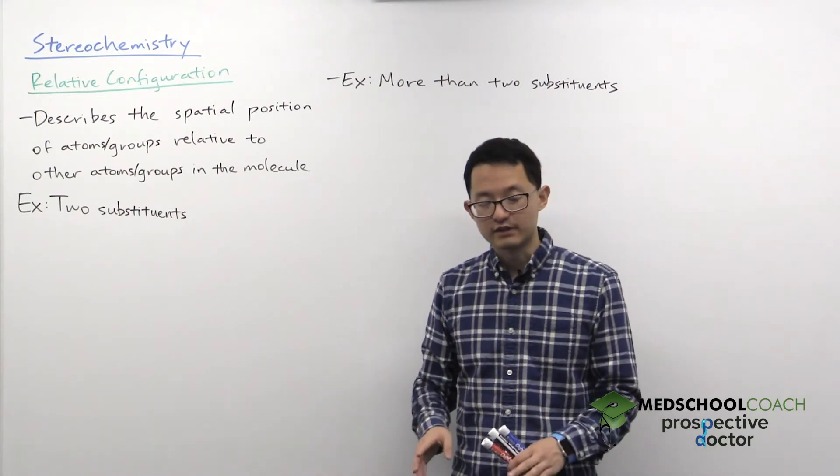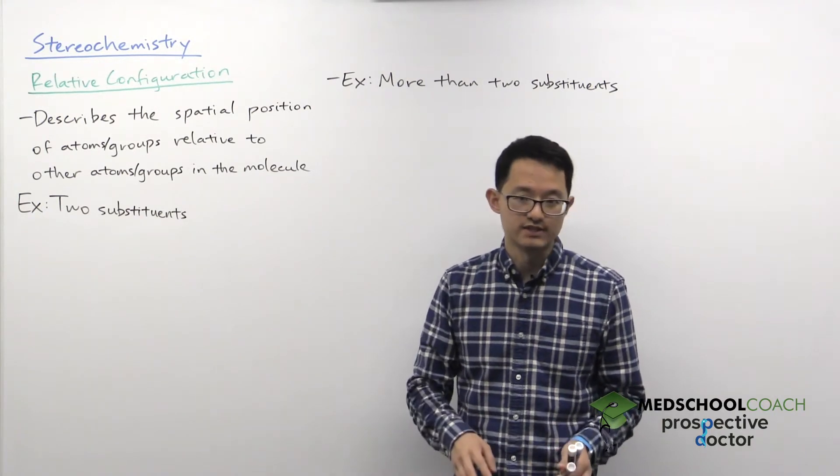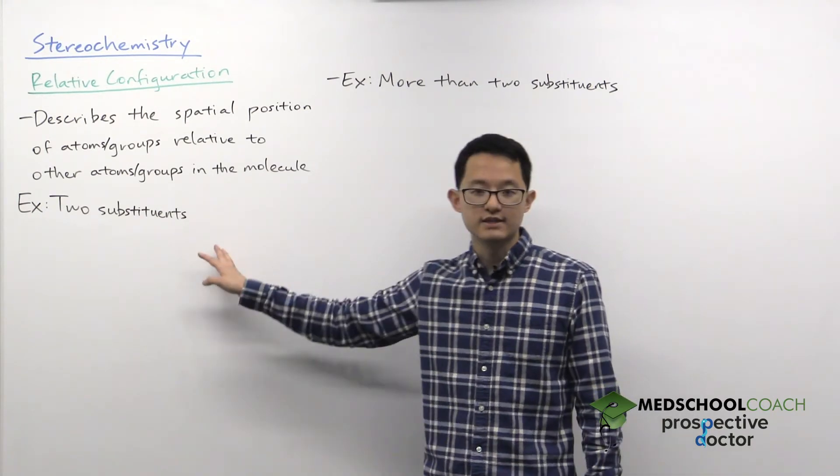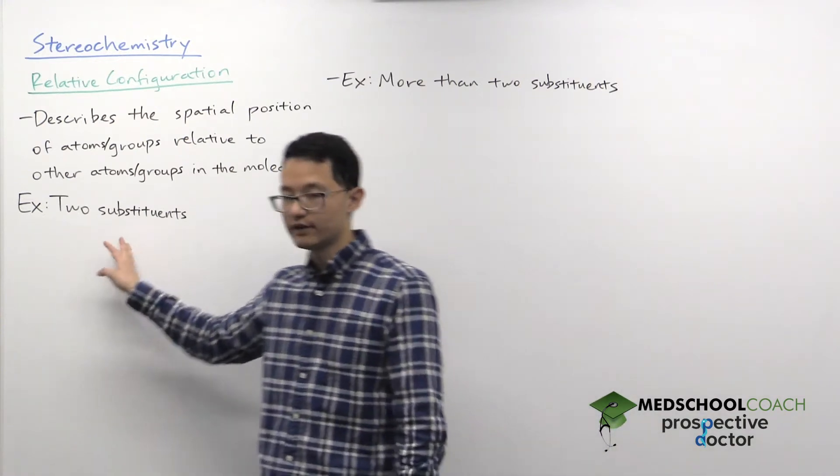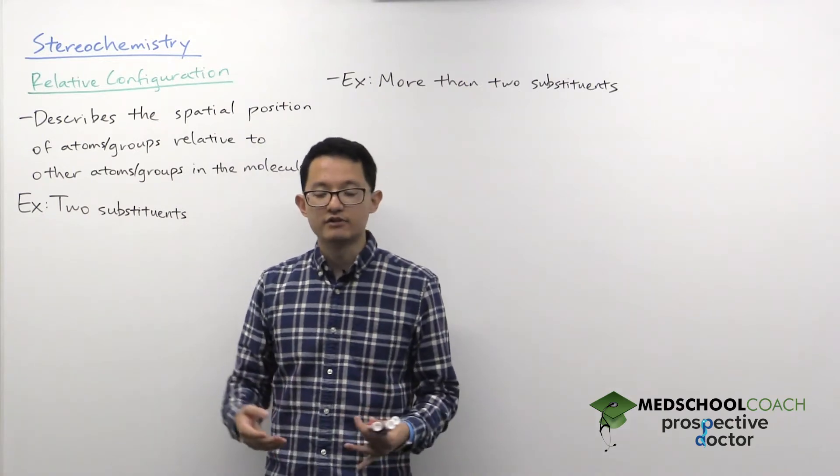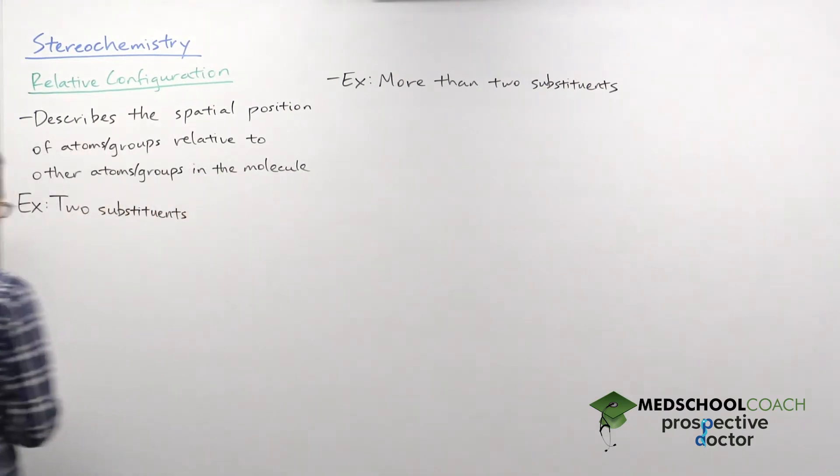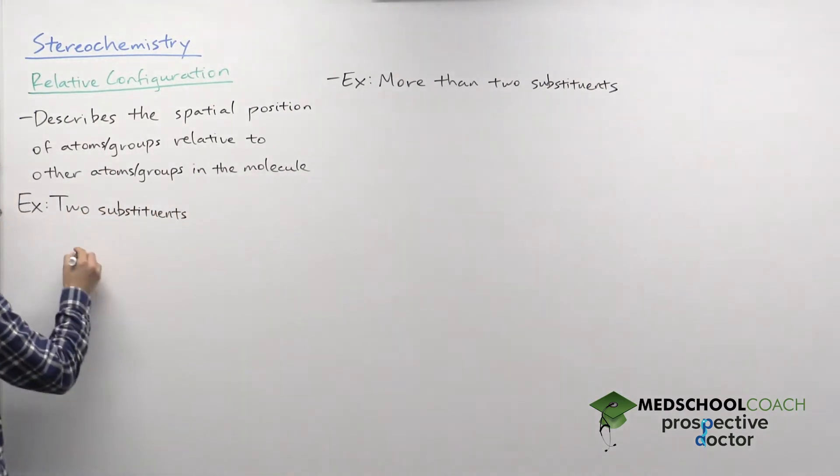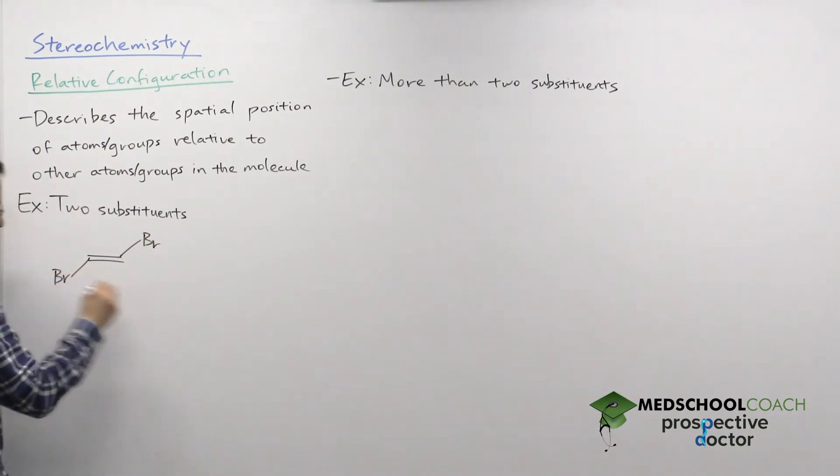Now, the rules for assigning relative configuration are different depending on the number of substituents that you have. So we'll look at the simpler case where we only have two substituents. When we're referring to substituents, we're looking at substituents generally about a double bond or a ring. So here we can consider an example where we have a double bond and we have two isomers.